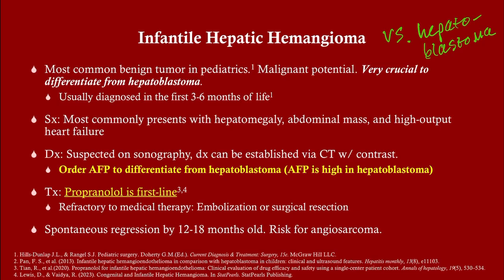Diagnosis of IHH starts with sonography; we try to avoid ionizing radiation in children. If you suspect IHH, proceed with CT with contrast. The key way to distinguish IHH from hepatoblastoma is alpha-fetoprotein (AFP): if AFP is elevated, you're likely dealing with hepatoblastoma; if normal, likely IHH. Normal AFP levels vary by age in early infancy, so you may be told the AFP is normal or elevated, but don't expect to be given specific numbers to memorize.